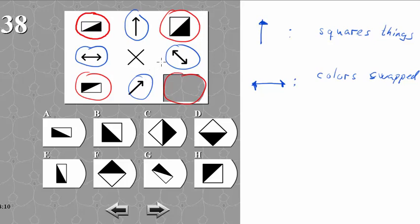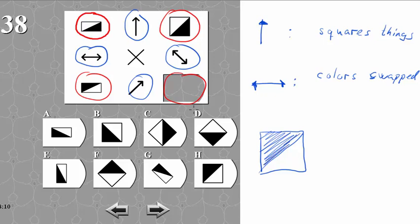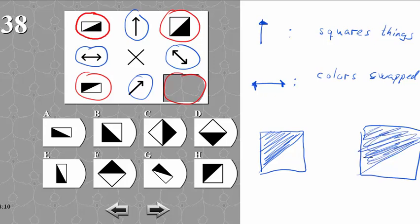So this is our theory. Let's try and apply it to this object. We have this figure here with a single arrow, so it should turn into a square — so that would be like this. Then we can look here: we have this figure here and the colors are going to be swapped. So that would be this figure here. So that checks out as well.